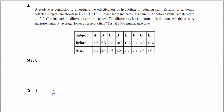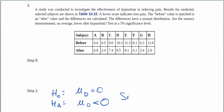Our null and alternative hypotheses use mu sub d for the differences. The null is that mu sub d is negligible or near zero, and the alternative is mu sub d is less than zero, so this is a left-tail test. That means we want to take our primarily small numbers and subtract them from the big numbers so most of the differences are negative.